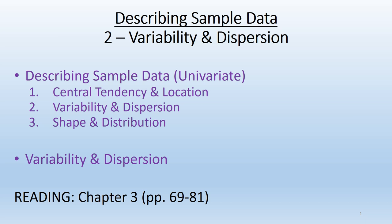Welcome back everyone. This is our second lecture focused on describing sample data — how do we describe or summarize one variable at a time, using univariate descriptive statistics. In our previous lecture we went over the three major measures of central tendency or location: the mode, the median, and the mean. Each one had its specific advantages for different types of variables, giving us an idea of what the typical or average response was for a particular variable.